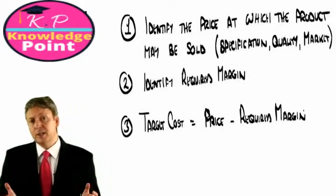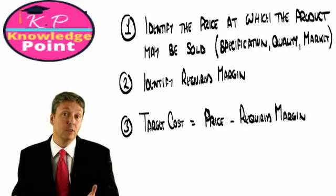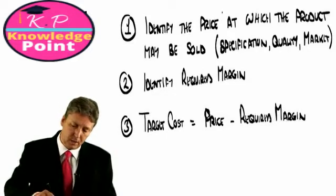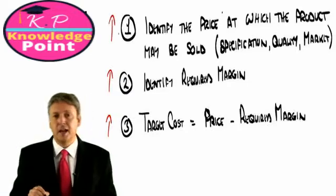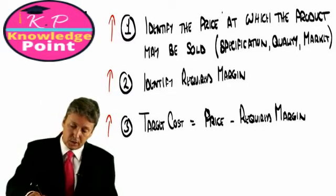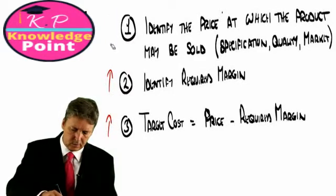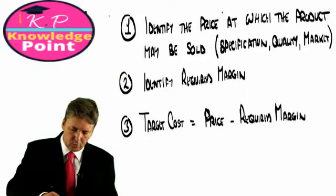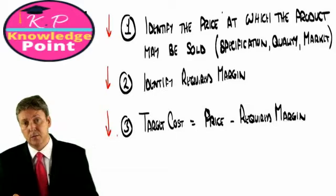A lot of people think of this as cost plus pricing in reverse. Cost plus, we get the cost, we add the margin, and hence establish the price. If you want to look at target costing, aren't we doing precisely the opposite to that? We get the price, establish the margin, and from that determine the cost.